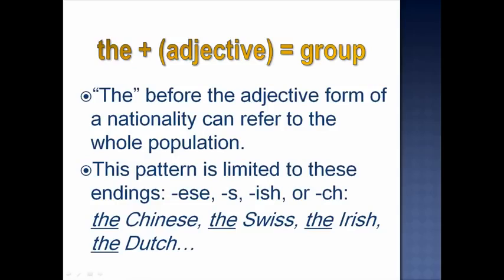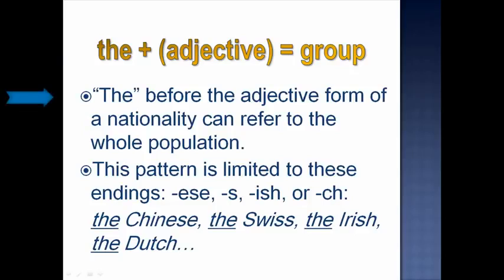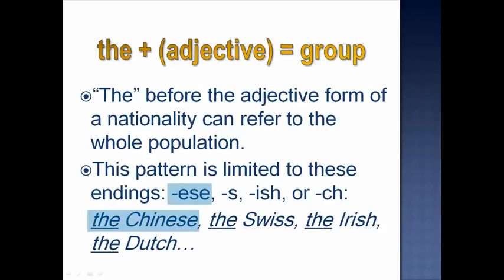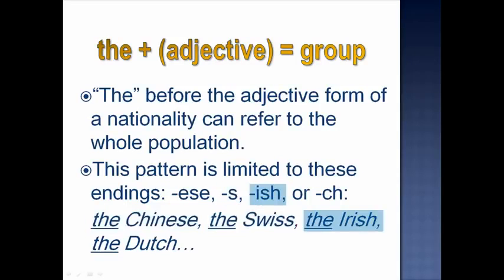The definite article plus an adjective can refer to a whole group — in other words, 'the' before the adjective form of a nationality can refer to the whole population. But this pattern is limited to these endings: -ese, -s, -ish, or -ch. Examples include: the Chinese, the Swiss, the Irish, the Dutch.